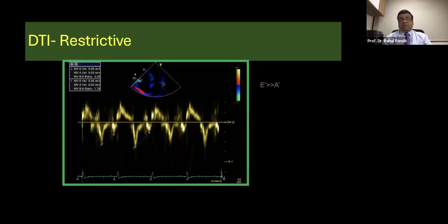In the restrictive pattern, no prizes for guessing your E prime will be much much more bigger as compared to A prime and it would actually match quite nicely with your diagnosis on a tissue Doppler imaging as well as on your mitral valve inflow imaging.